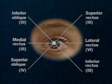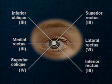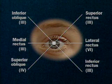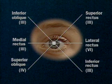Now check the six cardinal directions of gaze. These directions correspond to the coordinated action of six muscles involved in eye movement, innervated by cranial nerves 3, 4, and 6.